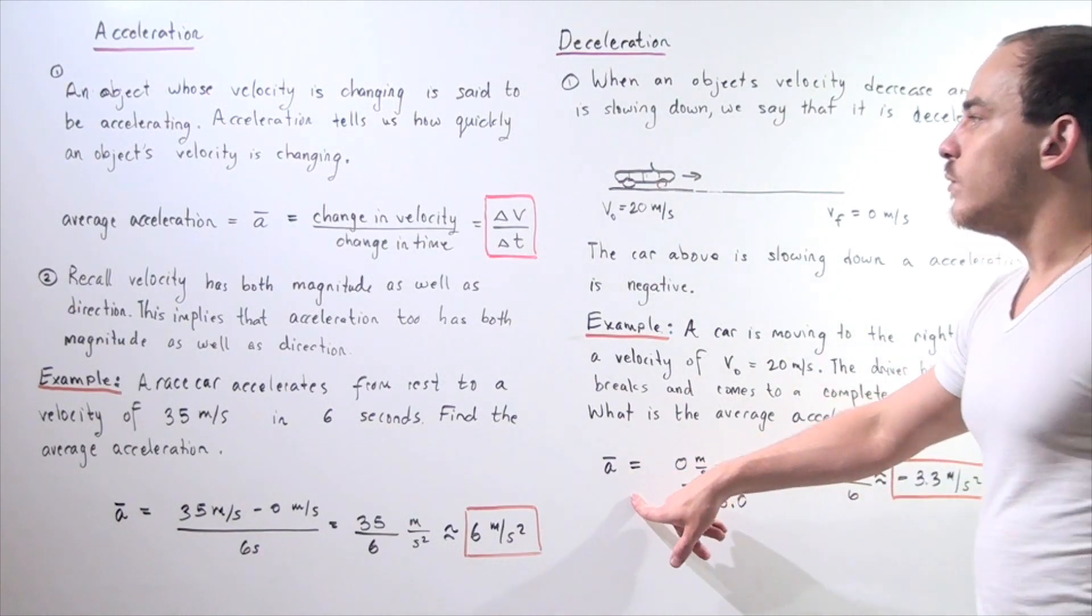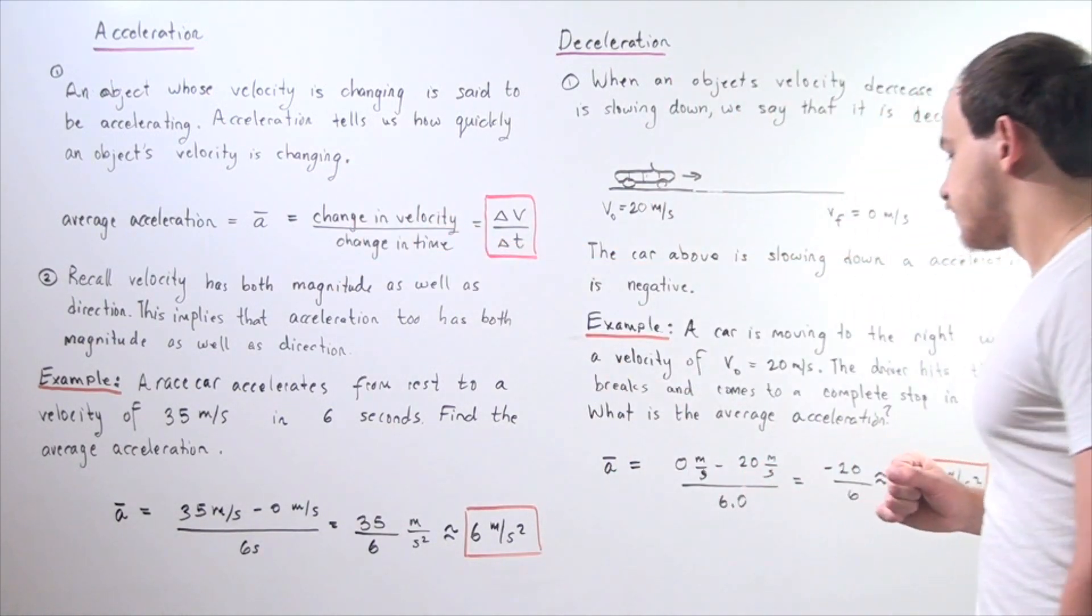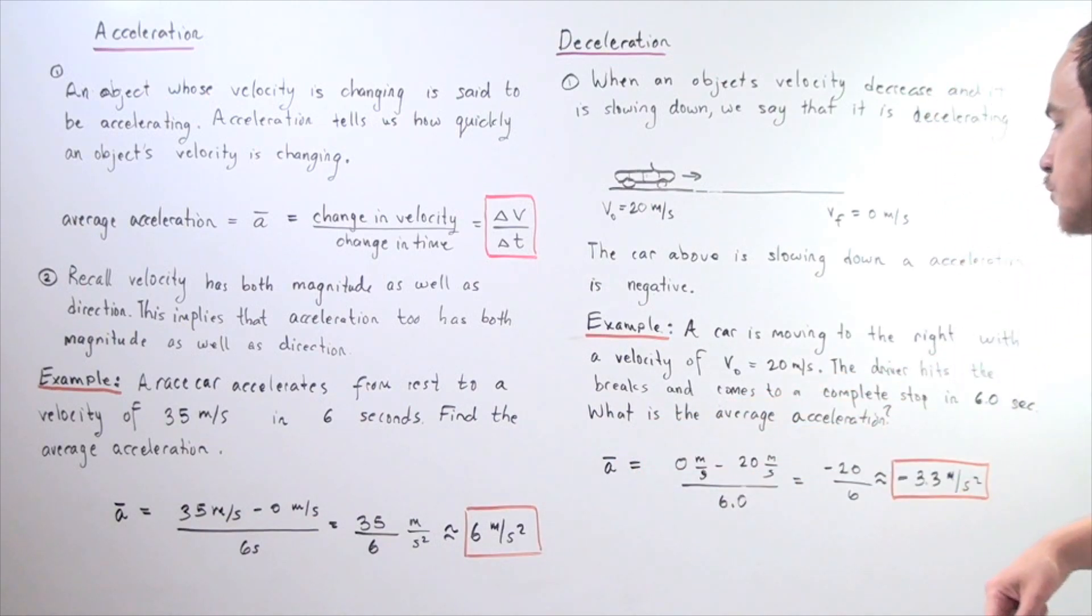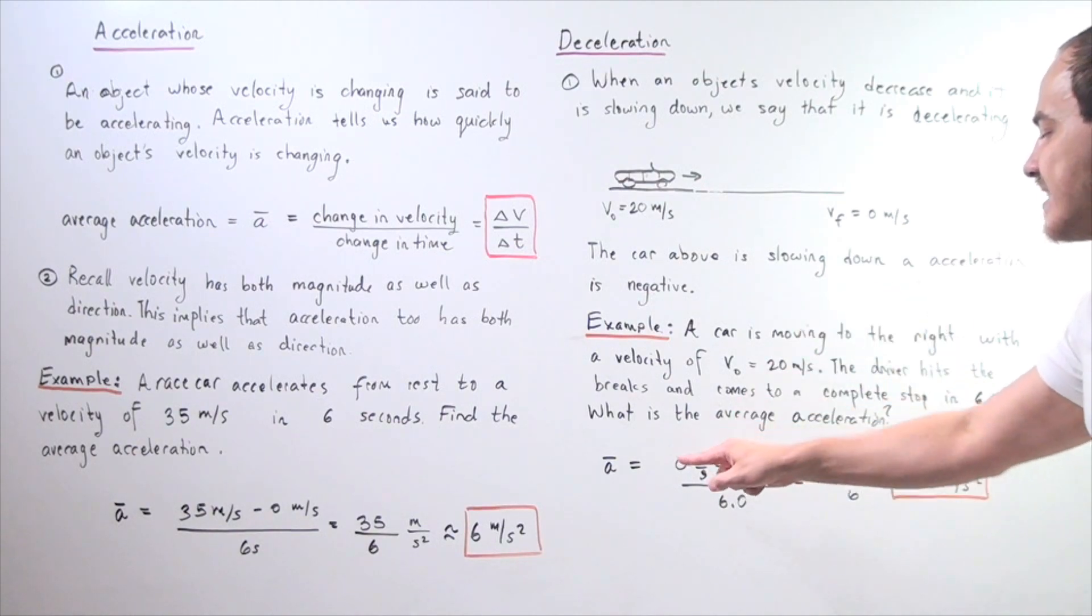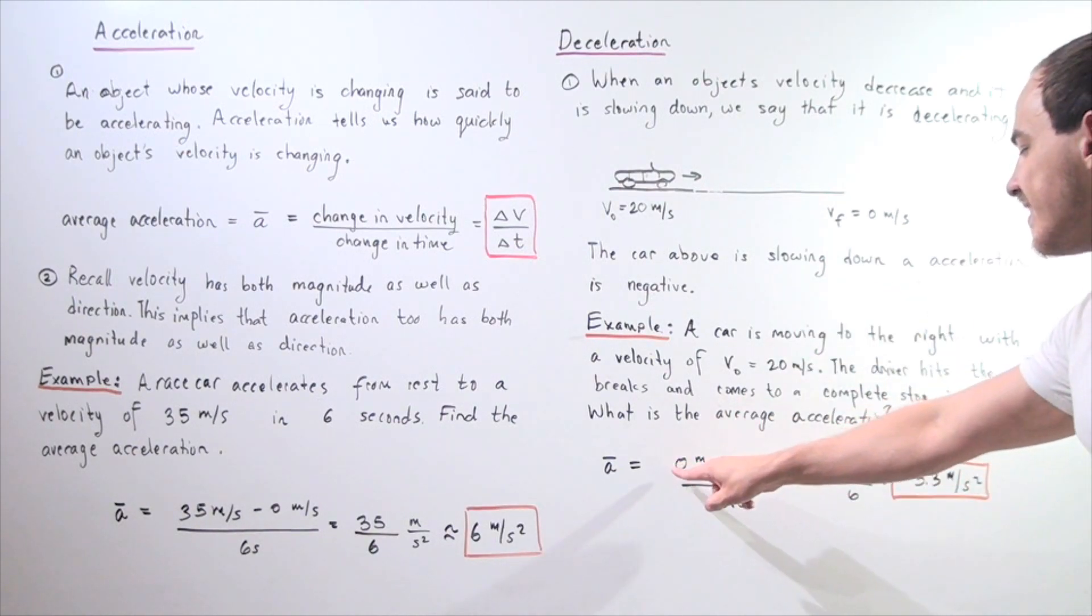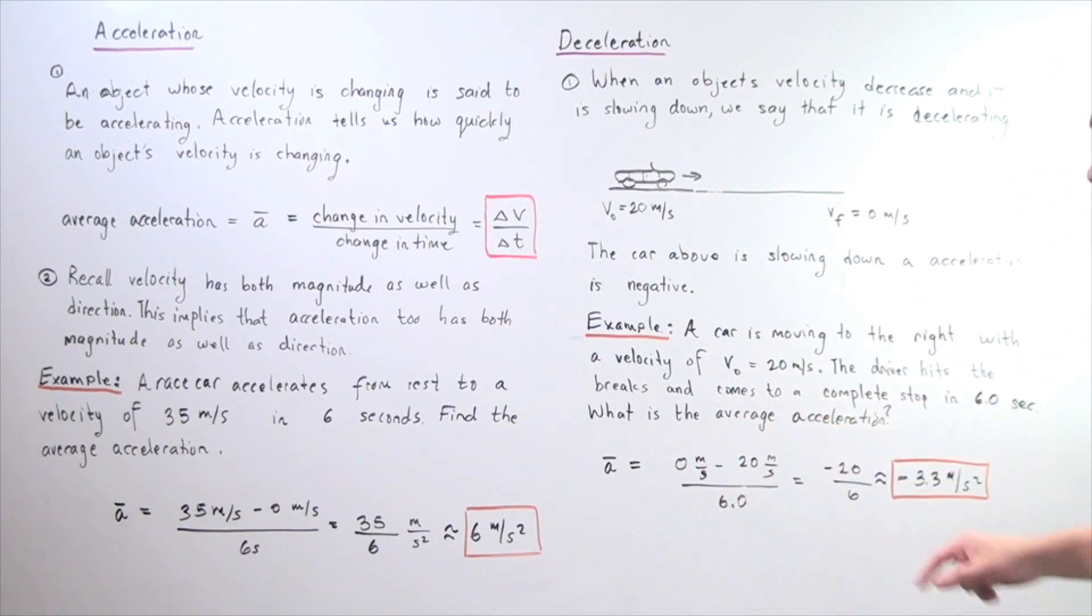Once again, we use the same exact formula. Our lowercase a with the bar on top equals... We begin at 20 meters per second and end at 0 meters per second. So, 0 minus 20 divided by 6.